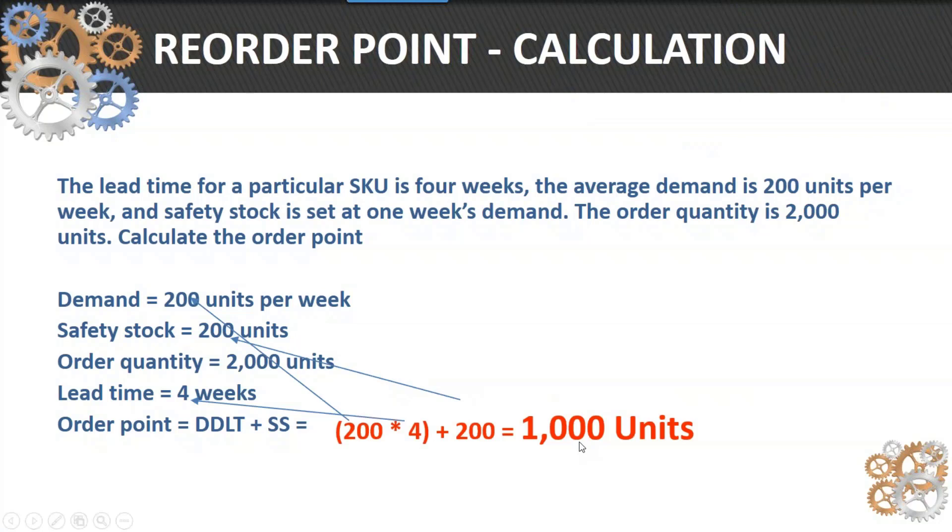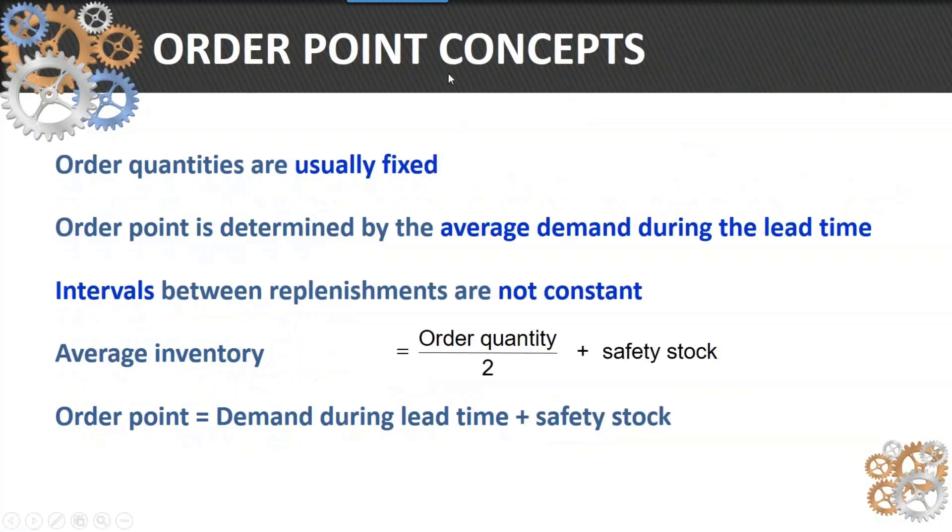Here are some reorder point concepts. Order quantities are usually fixed—that EOQ or lot size is normally the same. Reorder point is determined by the average demand through lead time, so you need to recalculate demand every single month or period. Intervals between replenishments are typically not constant because that demand curve, the saw-tooth curve, is not necessarily constant and consistent. Average inventory equals order quantity divided by 2 plus safety stock.